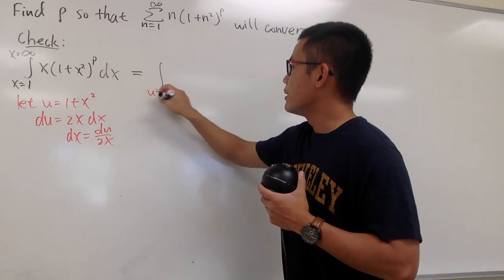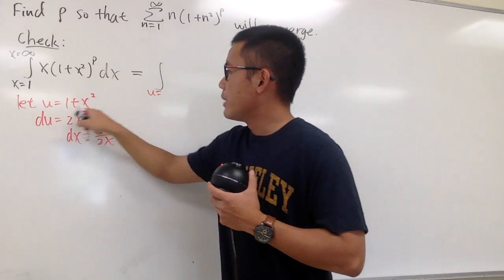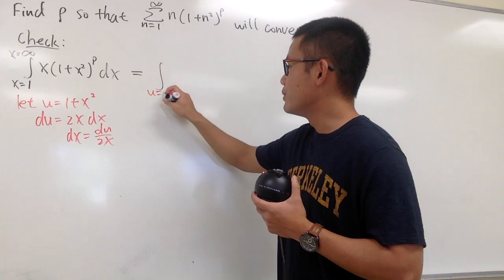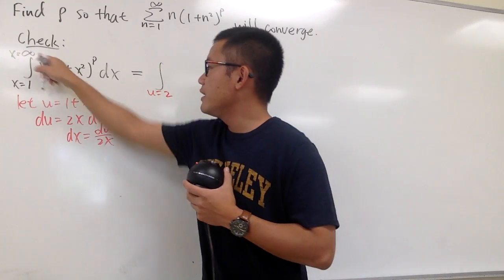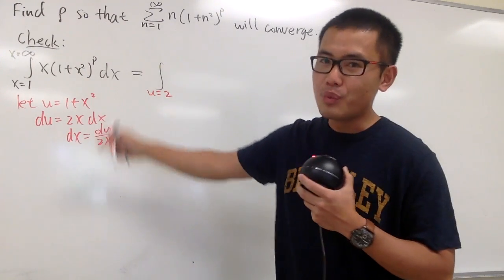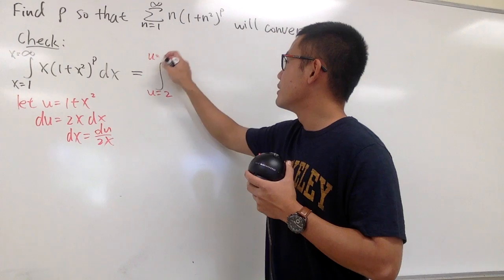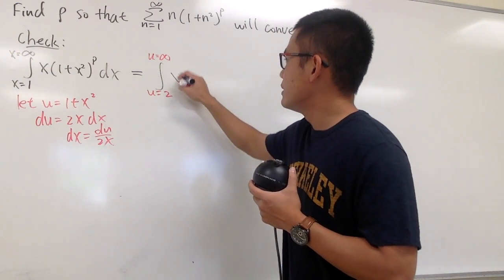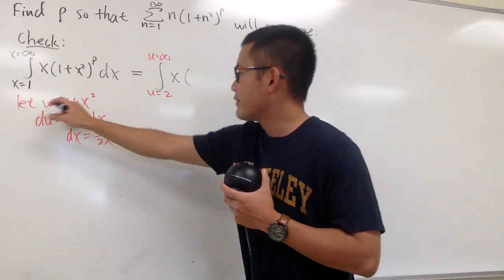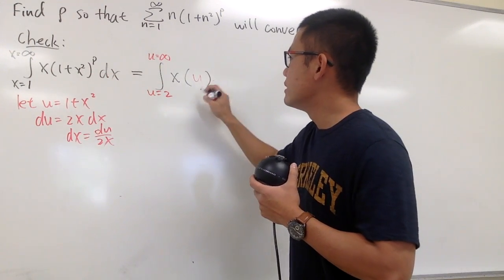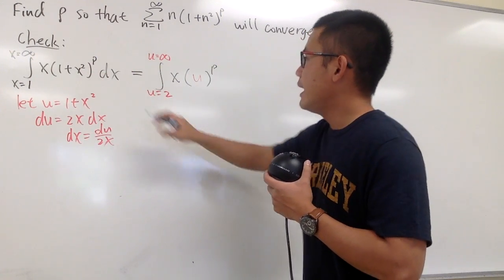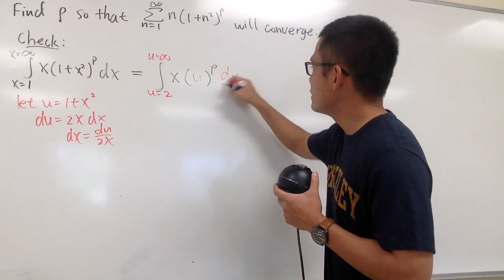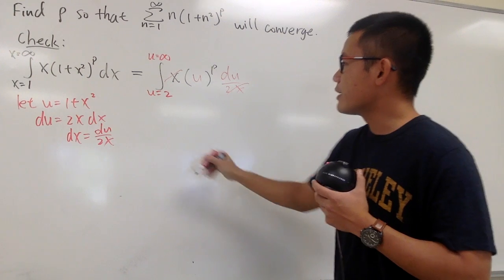Change them to u. When x is 1, plug into here: 1 plus 1 squared, 1 plus 1 pretty much. You get u equals 2. Plug in infinity: infinity squared plus 1 is still infinity. So we have u goes from 2 to infinity. Inside here, we have that u raised to the p's power, and the dx is du over 2x. The x and x will cancel each other out.